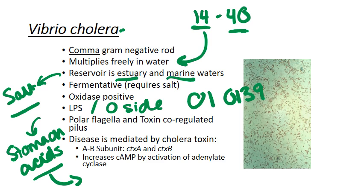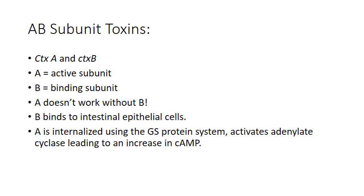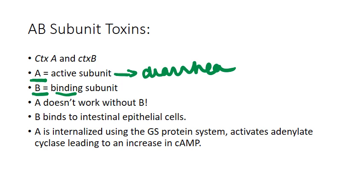The toxin is how the disease is mediated. It is a typical AB subunit toxin, meaning two subunits work together. The A subunit is the active subunit — it causes the actual mechanistic disease, in this case the diarrhea. The B subunit has no pathogenic activity; it just binds. However, A needs B because A cannot get into the epithelial cells without B. They need each other — A doesn't work without B and B doesn't work without A.